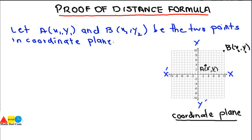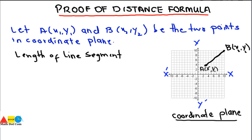We are going to find the distance between these two points. To derive the distance formula, we'll join the two points to form a line segment. The length of this line segment AB equals d, which is the distance we are going to find. The main purpose of this proof is to find the formula that gives us the distance between points A and B in the coordinate plane.